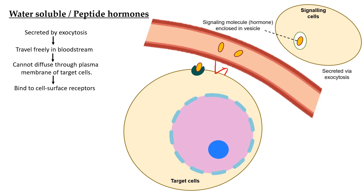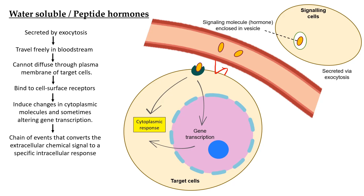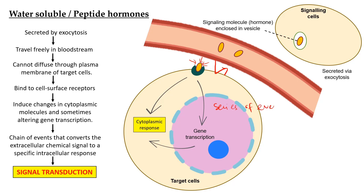Thus it needs to bind to the cell surface receptor — the receptor on the plasma membrane. This binding then triggers a cellular response, which can cause changes in cytoplasmic molecules or sometimes alter gene transcription, leading to a cytoplasmic response. This change of events that converts an extracellular chemical signal to a specific intracellular response is what we call signal transduction — binding of a signal outside the cell triggers a specific series of events inside the cell.